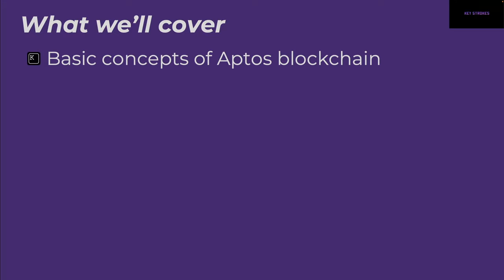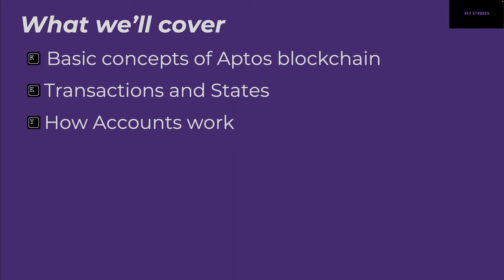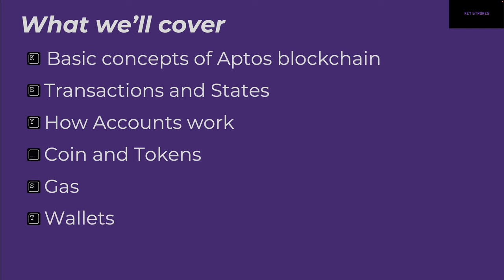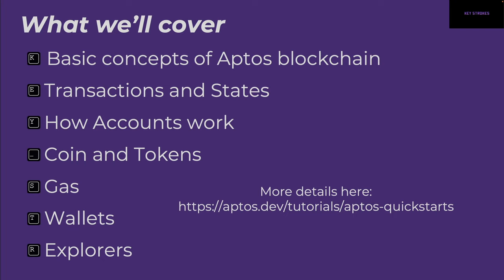Let's see everything we'll cover today. We'll talk about the basic concepts of Aptos blockchain, we'll discuss how transactions and states work, we'll touch upon accounts — how they are created and how they work — then we'll talk about coins and tokens, and then we'll touch upon our favorite topic which is how gas works. Then we'll explore different wallets and the explorers available to us.